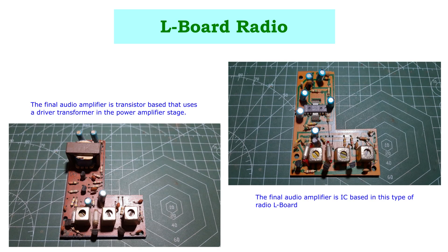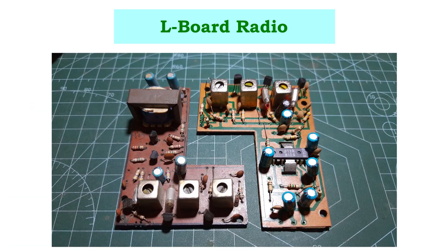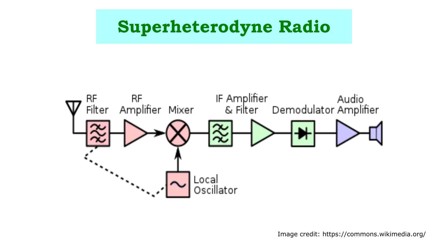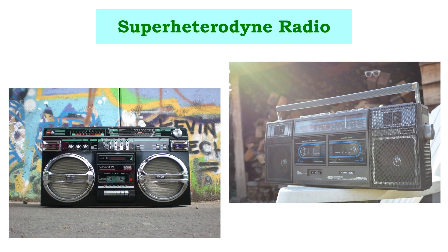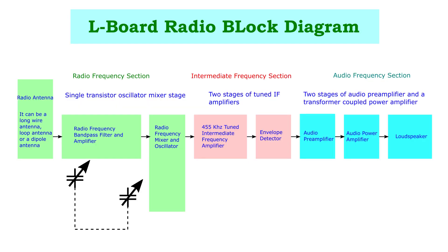The L board radio is based on the superheterodyne technique of radio reception, also called the superhet radio. Here the radio receiver uses the frequency mixing technique to convert the radio signal received from the antenna to a fixed intermediate frequency signal. This intermediate frequency is lower in frequency than the carrier signal, and it can be more conveniently processed than the actual radio signal. Most modern radio receivers use the superheterodyne technique for radio reception.